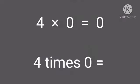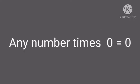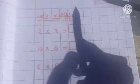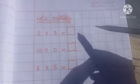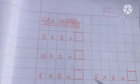We read it as four into zero is equal to zero, or four times zero is equal to zero. Always remember: any number times zero is equal to zero. Now let's understand how to solve sums of multiplication horizontally. Here we need to recite the tables.